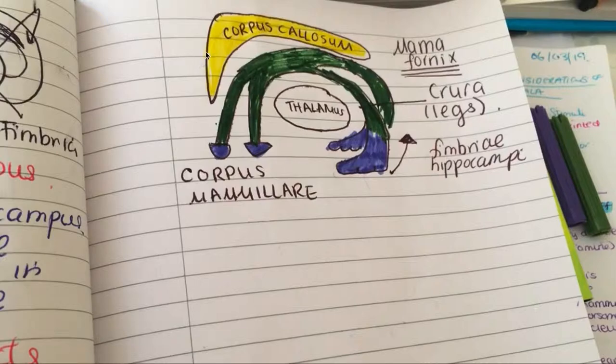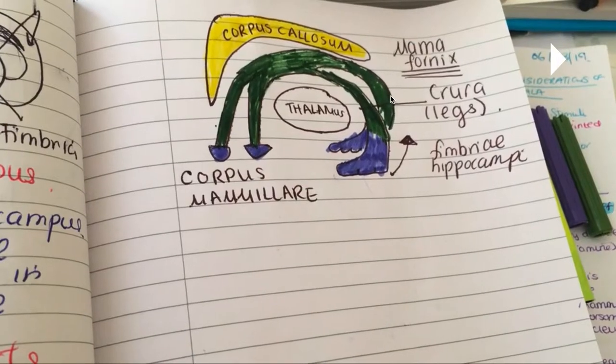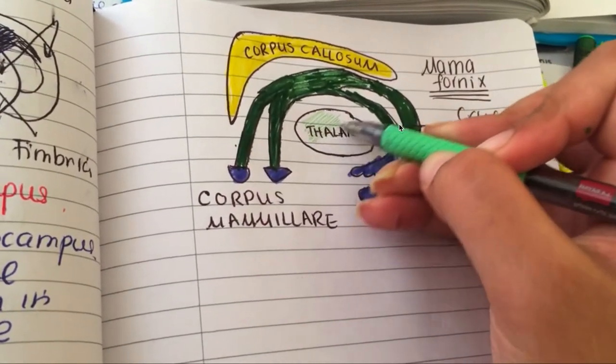Let's quickly review the parts of the corpus callosum. You have your rostrum, you have your genu, you have your body, and you have your splenium. And so again, underneath the splenium, you have the formation of the fornix, or the crura and the body.